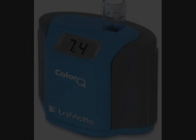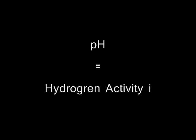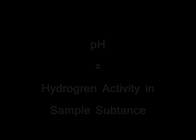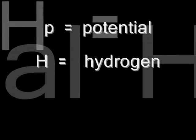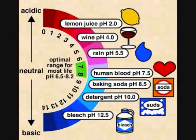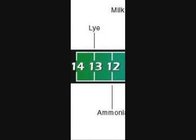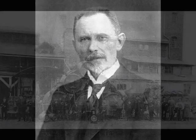Acids and bases are determined and measured by their pH. pH, written in the form lowercase p, uppercase H, is a measure of the hydrogen activity in a sample substance. A pH scale is used to indicate how acidic or how basic a substance is. The pH scale ranges from 0 to 14. The scale was developed in the early 1900s by Dr. Sorensen, and is believed to have been used initially with the brewing industry.